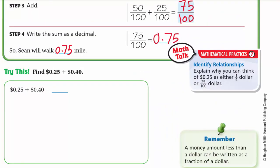Let's try 25 cents plus 40 cents. Here we already have two decimal digits in each number, so we don't need to write any extra zeros. Adding from the right: 5 plus 0 is 5, 2 plus 4 is 6, then the decimal point, then 0. So the answer is 0.65, or 65 cents. If both numbers have two decimal digits, you're fine — just add from the right.